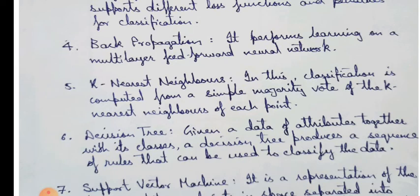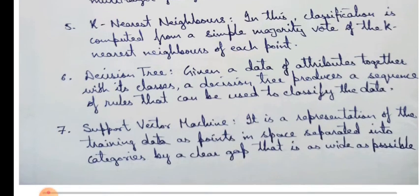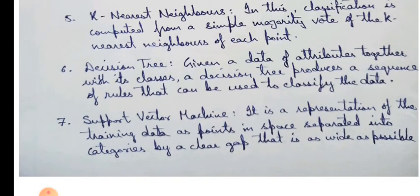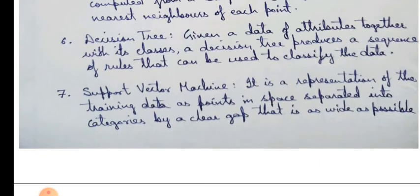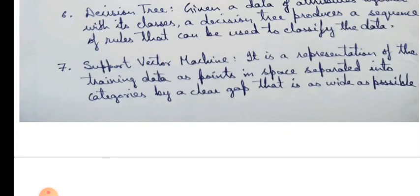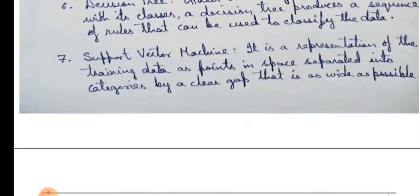The fifth is k-nearest neighbors. In this, classification is computed from a simple majority vote of the k-nearest neighbors of each point. In decision tree, given a data of attributes together with its classes, a decision tree produces a sequence of rules that can be used to classify the data. And the last is support vector machine. It is a representation of the training data as points in space separated into categories by a clear gap that is as wide as possible.